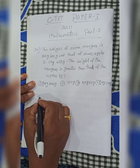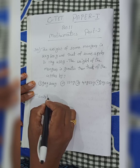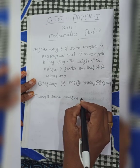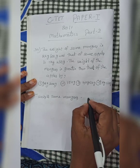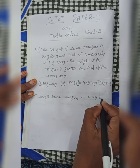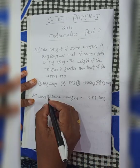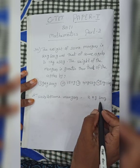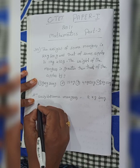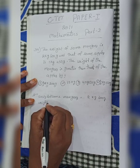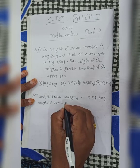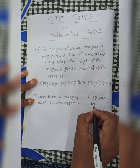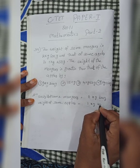Solution. Weight of some mangoes is 2 kg 600 grams. Weight of some apples is equal to 1 kg 450 grams.